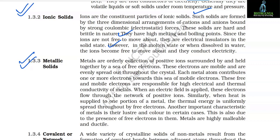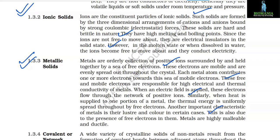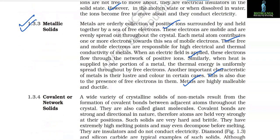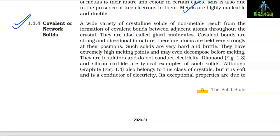1.3.3 Metallic Solids. Metals are orderly collections of positive ions surrounded by and held together by a sea of free electrons. These electrons are mobile and evenly spread throughout the crystal. Each metal atom contributes one or more electrons to this sea of mobile electrons. These free and mobile electrons are responsible for the high electrical and thermal conductivity of metals. When an electric field is applied, electrons flow through the network of positive ions. Similarly, thermal energy is uniformly spread by free electrons. Metals are highly malleable and ductile, and their lustre and color are also due to free electrons.